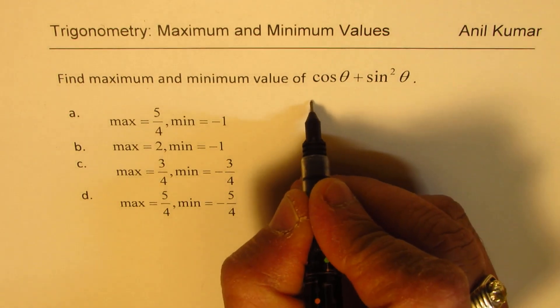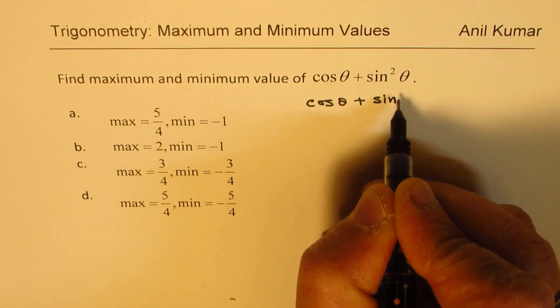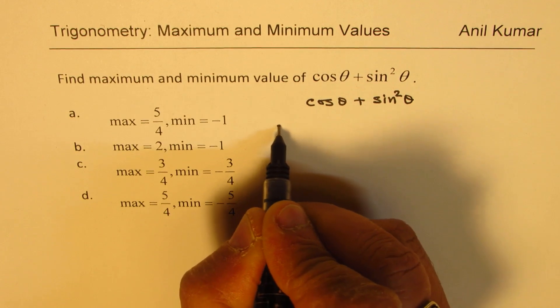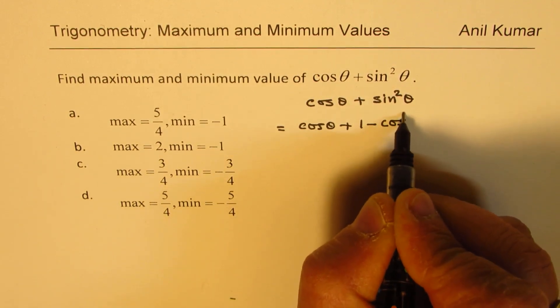Now what we can do here is write all these in terms of cos. So we can write cos θ + sin² θ as equal to cos θ + 1 - cos² θ.